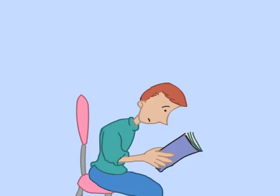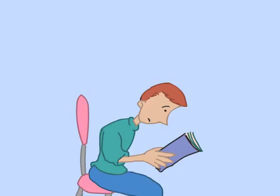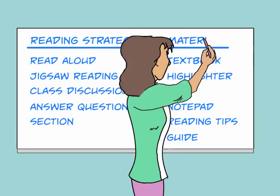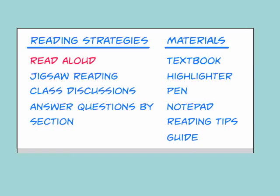Yet another reason for modification would be to support reading for comprehension, since the reading level for science curricula can be challenging for some students. Teaching strategies may be needed to support students' comprehension of the reading and to help them develop their ability to extract information. These strategies include reading aloud in class, jigsaw reading, class discussions of the main ideas in each section of a reading, and dividing the reading into smaller sections with questions designed to help students identify the important information.